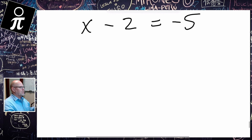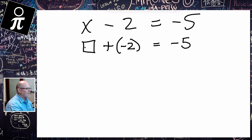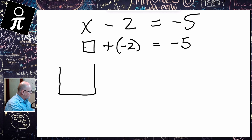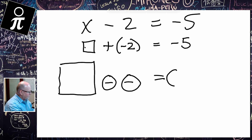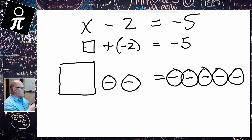Next: x minus 2 is equal to negative 5. We're going to think of this not as minus 2, but as plus a negative 2 equals negative 5. The reason we think about it as adding a negative 2 — which is equivalent to subtracting a positive 2 — is because we want to be able to model it. So that model gives us a box and then two negatives, which is going to equal five negatives on the right. On the left, we've got a box plus these two negatives.